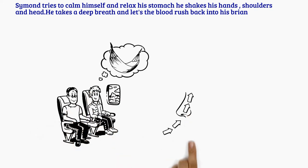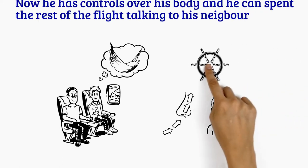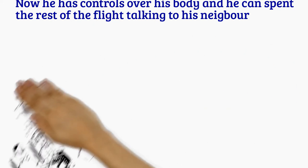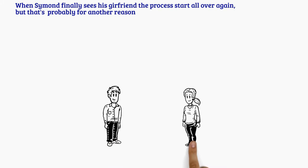He takes a deep breath and lets the blood rush back into his brain. Now he has control over his body and he can spend the rest of the flight talking to his neighbor.